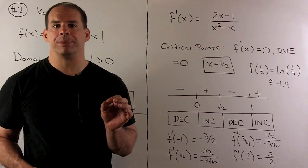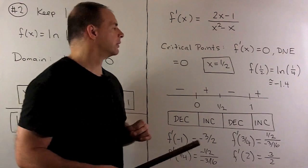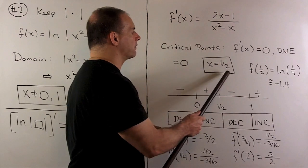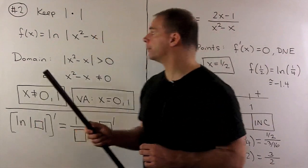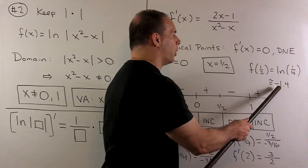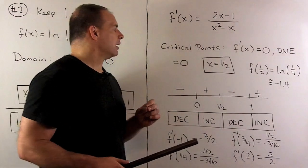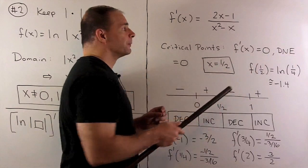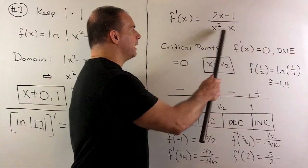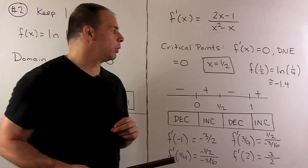For increasing and decreasing, we find critical points where the derivative equals 0 or does not exist. The numerator equals 0 at x = 1/2. Substituting into the original function gives ln(1/4), which is approximately -1.4 — one point on our graph. The derivative does not exist where the denominator is 0, i.e., x = 0 and x = 1, already accounted for as vertical asymptotes. So we have one critical point at x = 1/2.